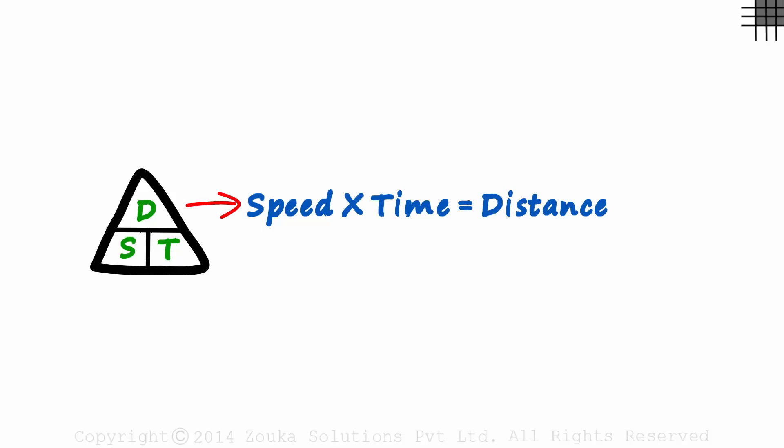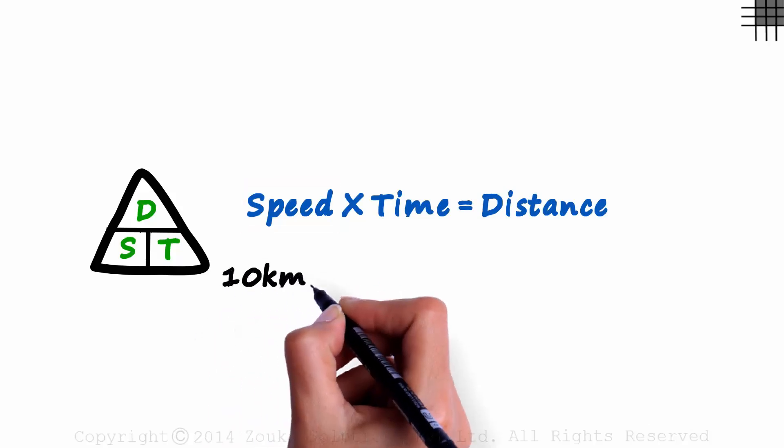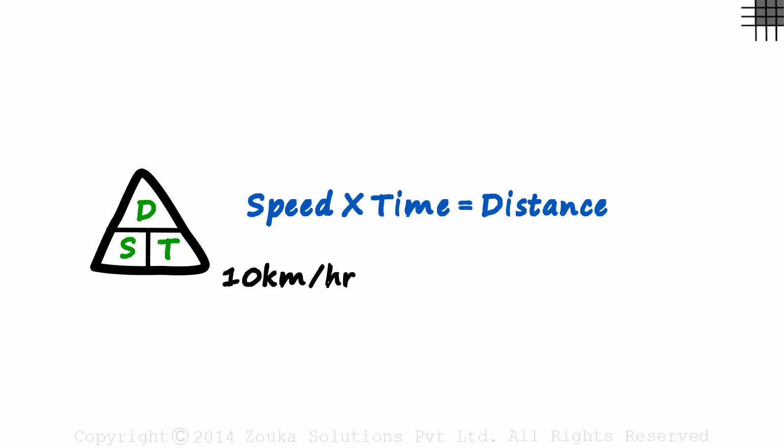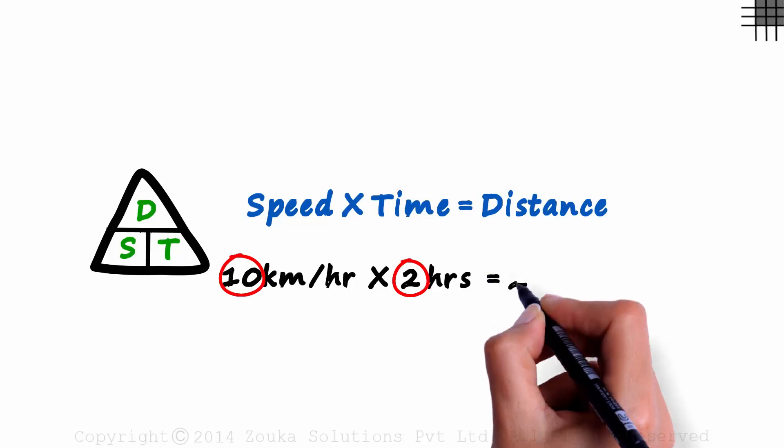How are these parameters given to us? Speed is given as a rate, something like 10 kilometers per hour. Say we travel at this rate for two hours. What will be the distance covered? It will be 10 times 2, or 20 kilometers.